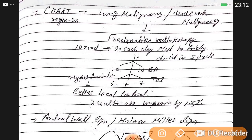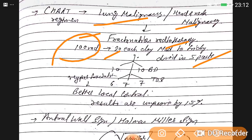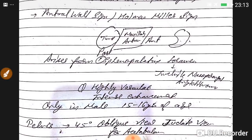CHART regimen is used for lung malignancy and head and neck malignancy. Fractionation of radiotherapy: if 100 rads are needed, give 20 rads per day Monday to Friday — that is conventional fractionation. Hyperfractionation means dividing into BD doses of 10-10 or TDS doses, giving more fractions per day for better local control — results improved by 15%. Hallman-Miller sign is for the enteral wall.